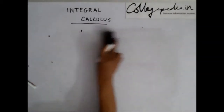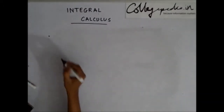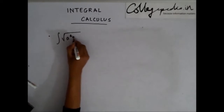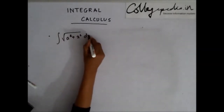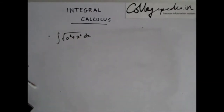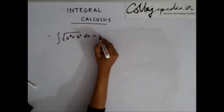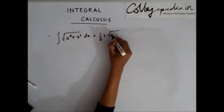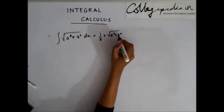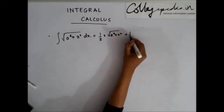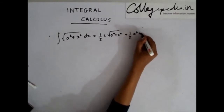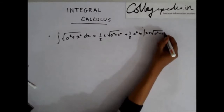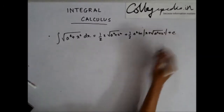The integration of √(a²+x²) dx is given by: half of x·√(a²+x²) plus half of a² times ln of (x + √(a²+x²)) plus a constant c.